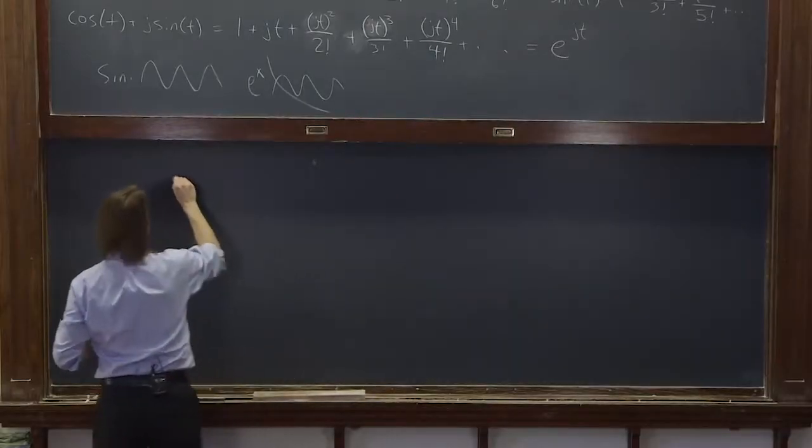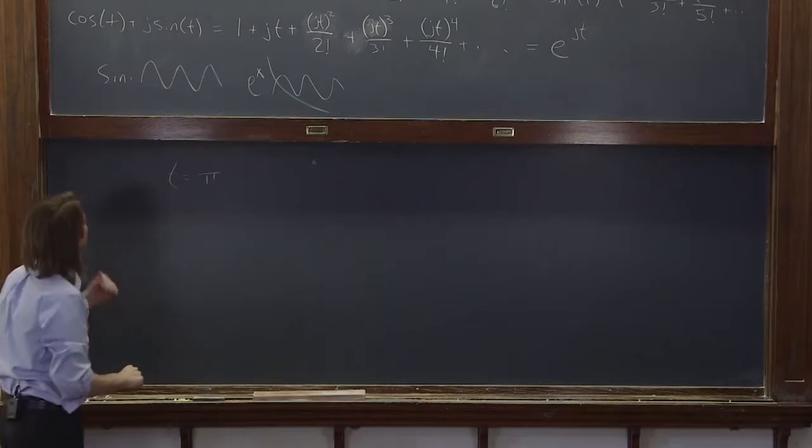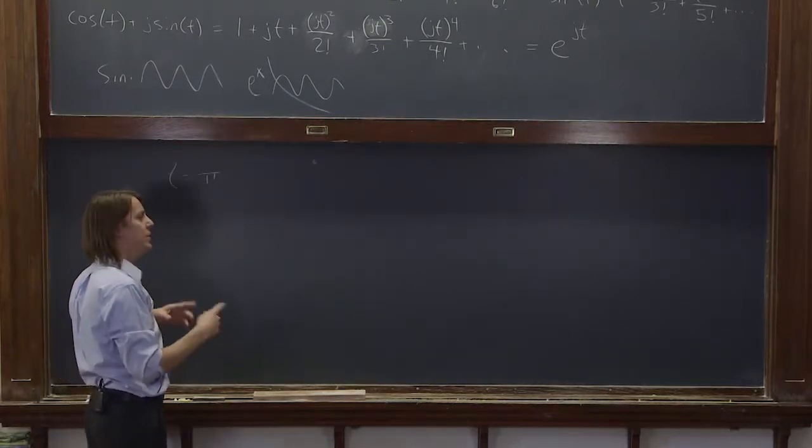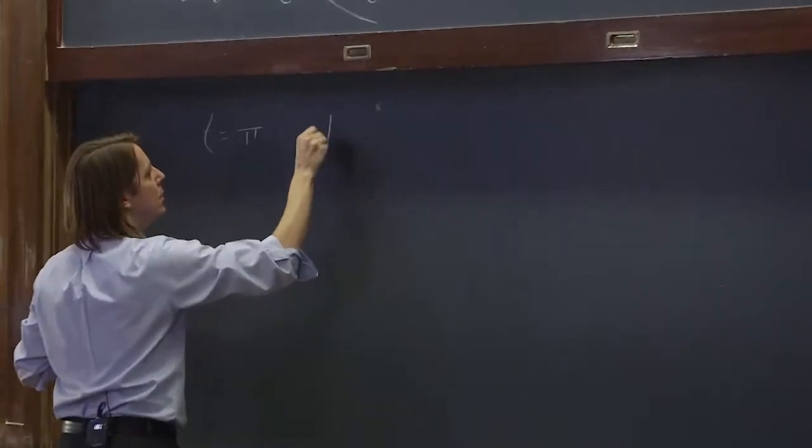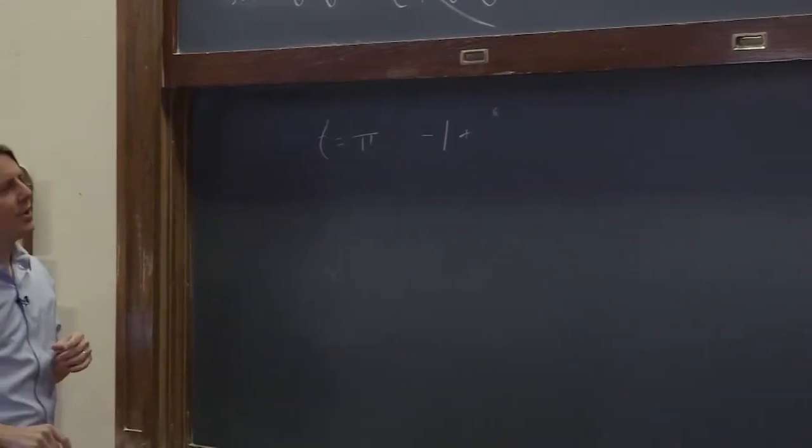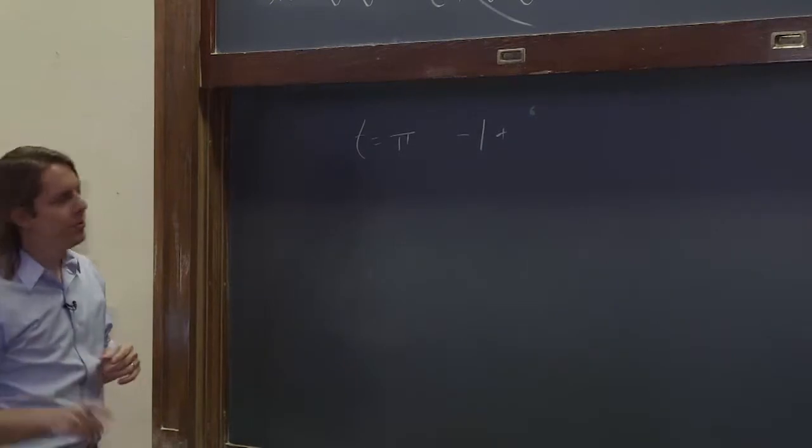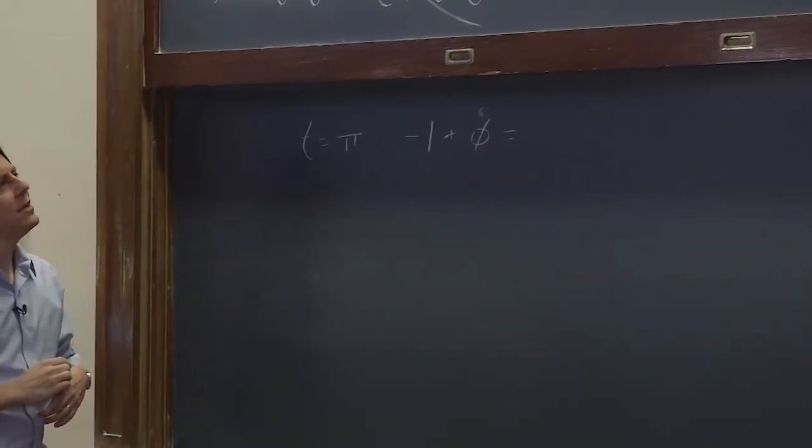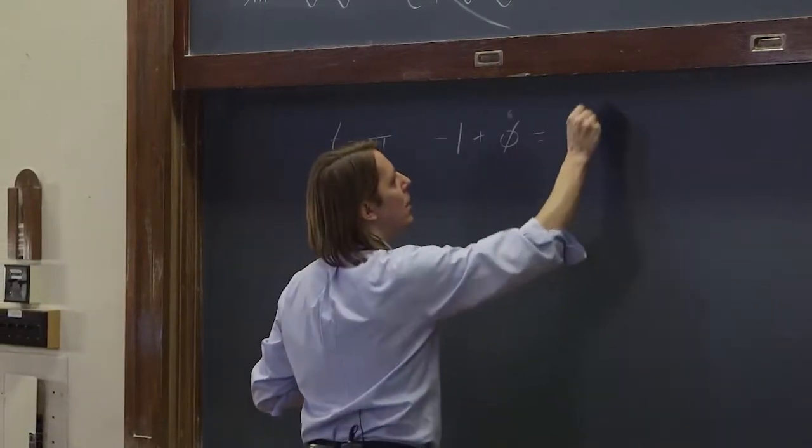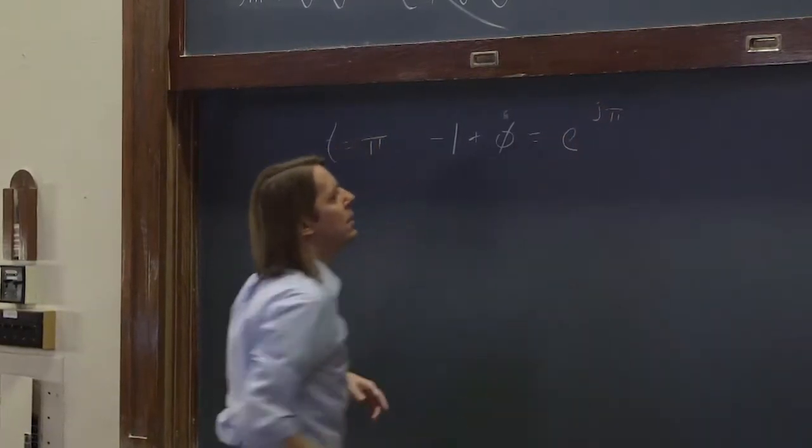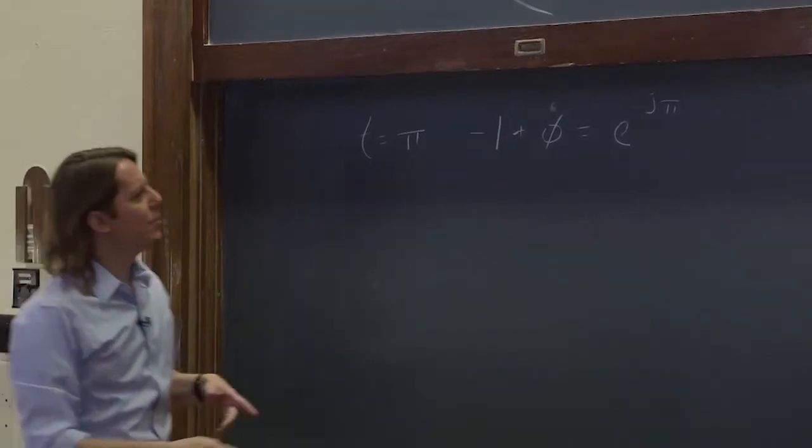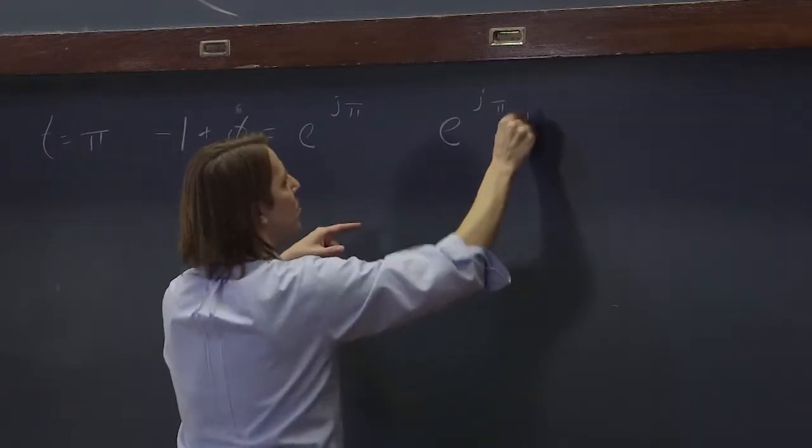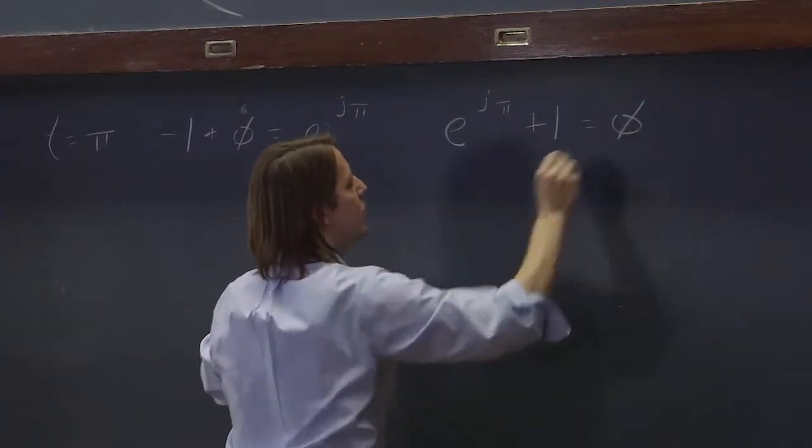So let's see. Say if we let t equal pi, what are we going to get? So we're going to get cosine of pi, which is negative one. We're going to get j times sine of pi, which is zero - the sine of pi is zero. Equals e to the jpi. So that looks kind of weird. Let me rearrange it just a little bit. E to the jpi, bring this over here, plus one equals zero.